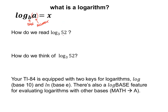How do we read a logarithm expression? I would read this as 'log base 3 of 52.' That argument is just like it was a function, like f of x — log base 3 of 52. The logarithm with a base of 3 and an argument of 52 is the perfect exponent to turn the base of 3 into the 52 that's in the argument.